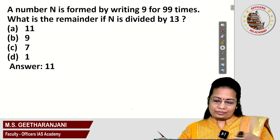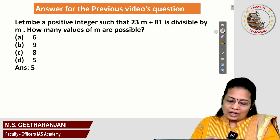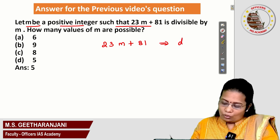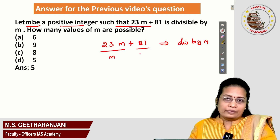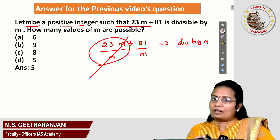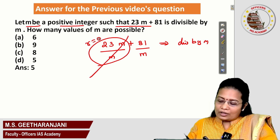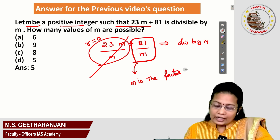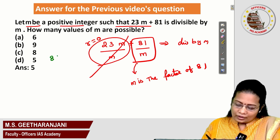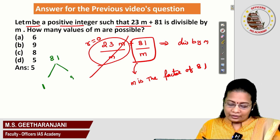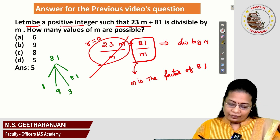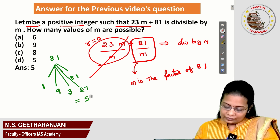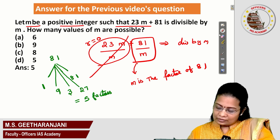Answer for the previous question: Let x be a positive integer such that 23m + 81 is divisible by m. Since 23m is a multiple of m, the remainder from 23m is 0. So m must be a factor of 81. Let us analyze the factors of 81: 1, 3, 9, 27, and 81. Totally 5 factors. So the answer is 5 — there are 5 possible values for x. You can choose option D.